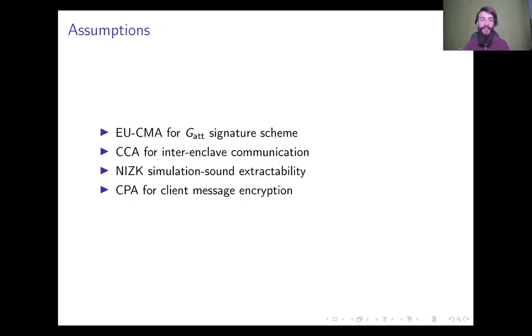Our proof relies on several cryptographic assumptions. In particular, the attestation signature is existentially unforgeable. The secure channels between enclaves are CCA secure. Our plaintext proof of knowledge is simulation sound extractable, and the encryption scheme used for message encryption is CCA secure. For all these assumptions, we have a corresponding hybrid and reduction in the proof.